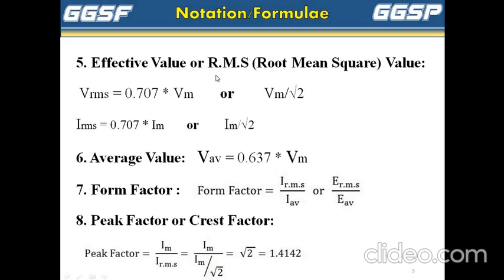Effective value or RMS value, that is root mean square value, is denoted by Vrms. Vrms is equal to 0.707 into Vm, or Vm by root 2, for voltage. Irms is equal to 0.707 into Im, or Im divided by root 2, for current.